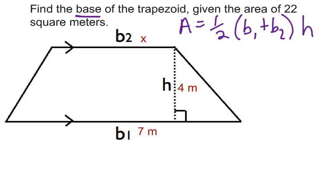Then we plug in what we know. Well, in this problem, we know that the area is 22. We know that we have a base 1 of 7. We have a height of 4. And we need to find the x.